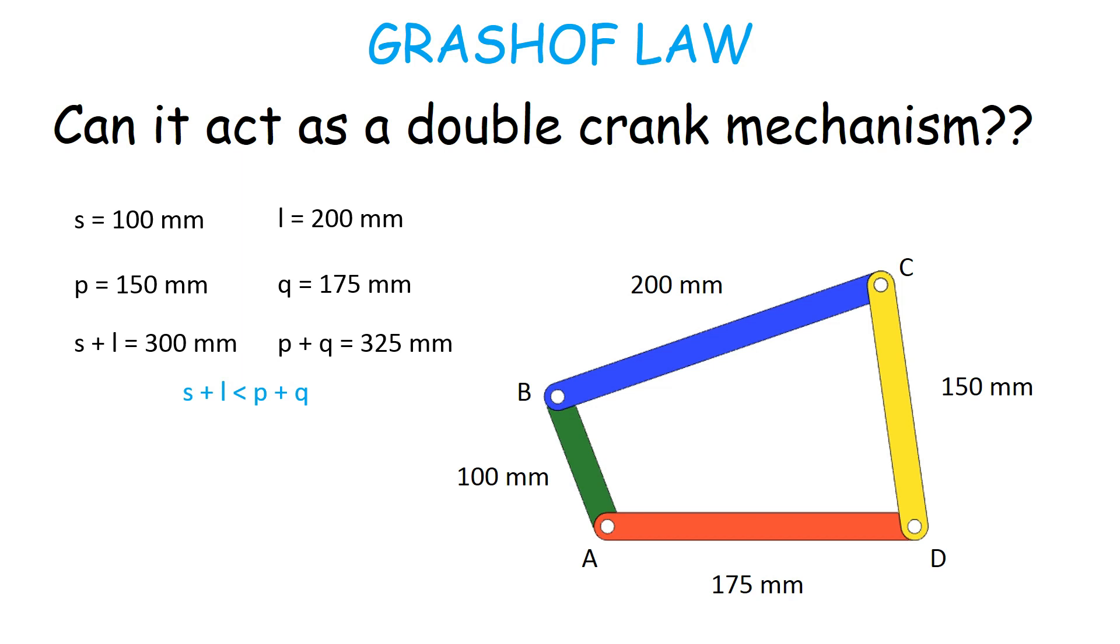Clearly, the sum of the lengths of the shortest link and the largest link is less than the sum of the lengths of the other two links, and hence the given linkage satisfies the Grashof criterion.